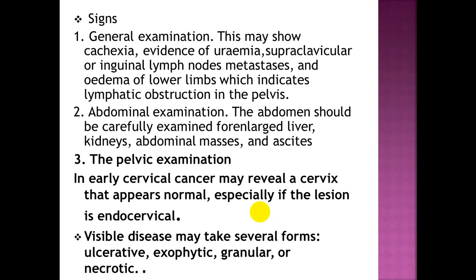General examination may show cachexia, evidence of uremia, supraclavicular or inguinal lymph nodes, metastases, and edema of the lower limbs indicating lymphatic obstruction in the pelvis. Abdominal examination should carefully look for enlarged liver, kidneys, abnormal masses, abdominal lymph nodes, and ascites.